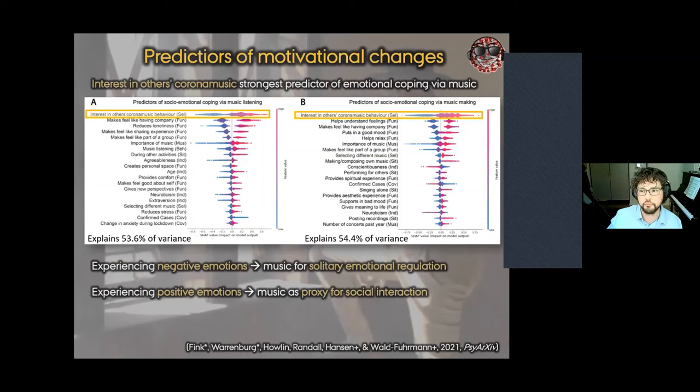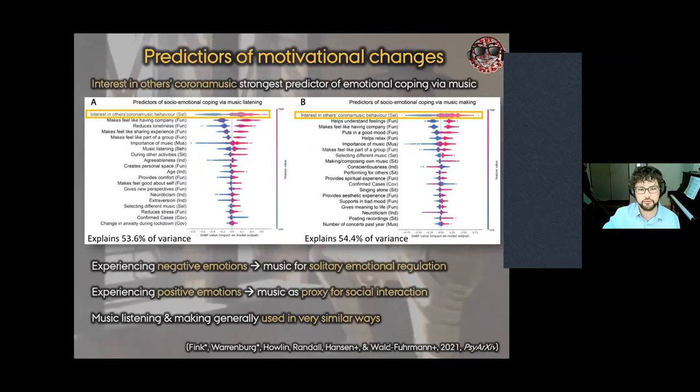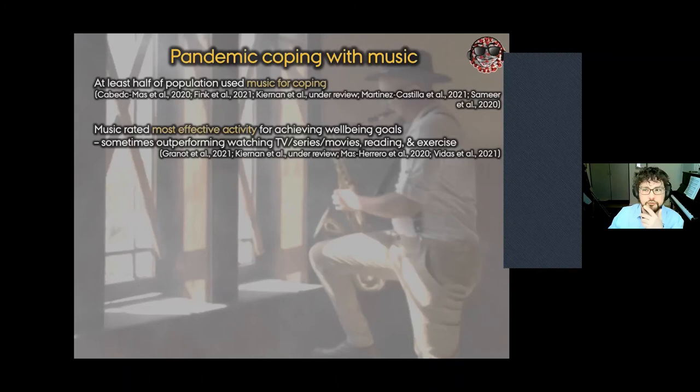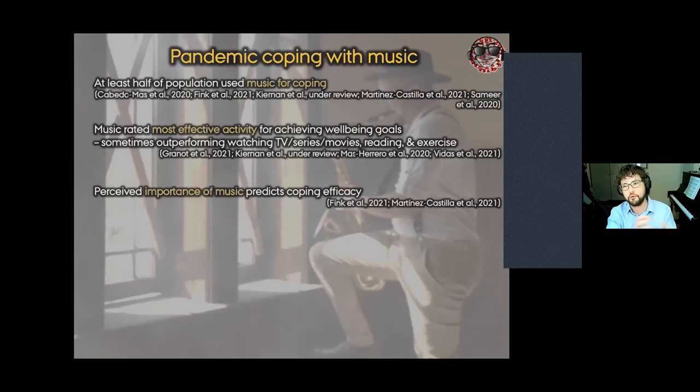We also saw that people who experienced negative emotions were more likely to use music for solitary emotional regulation, whereas people who experienced positive emotions were more likely to use music as a proxy for social interaction. So here you have social surrogacy and emotional coping showing themselves. As I mentioned before, these patterns were quite similar between music listening and music making, there were some important differences but mostly they were quite similar.